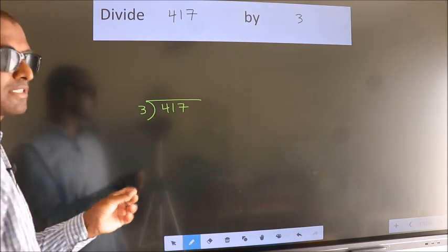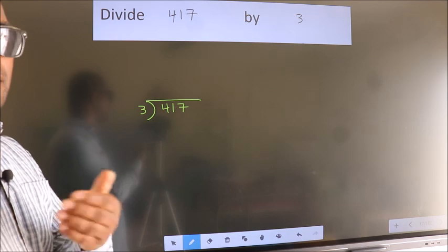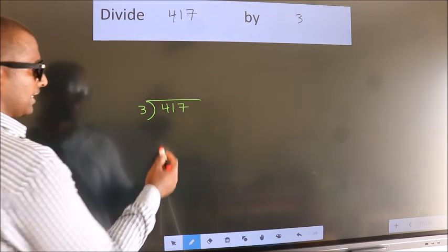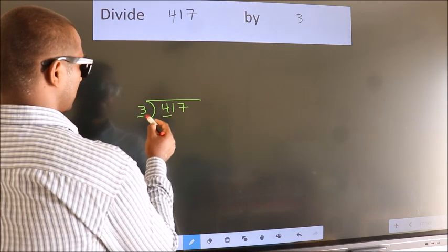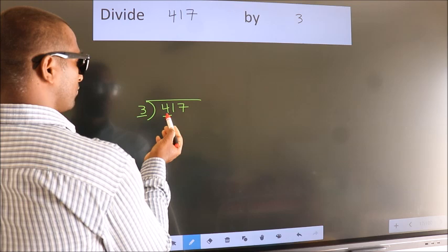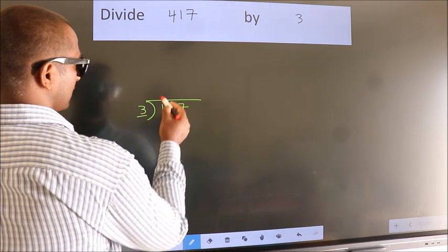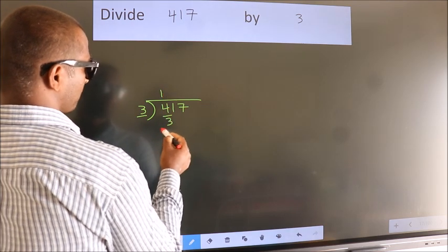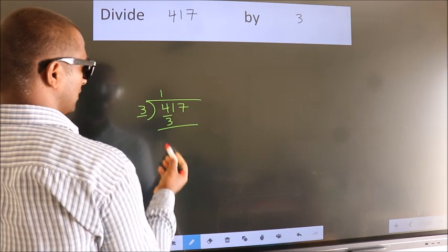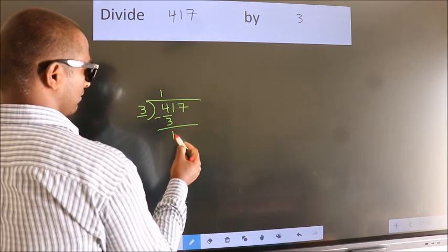This is your step 1. Next, here we have 4, here 3. A number close to 4 in 3 table is 3 1s 3. Now we should subtract. We get 1.